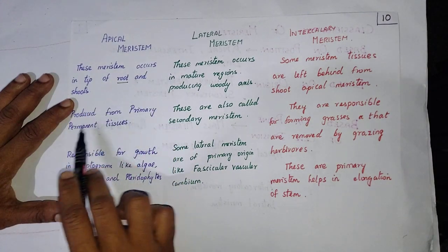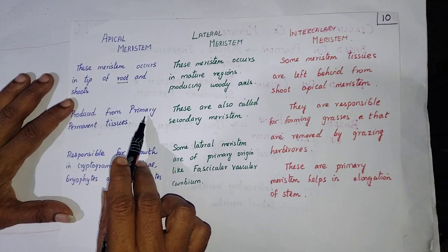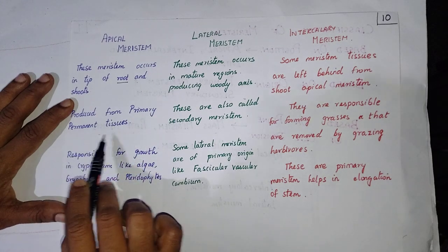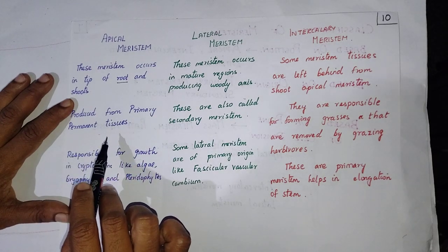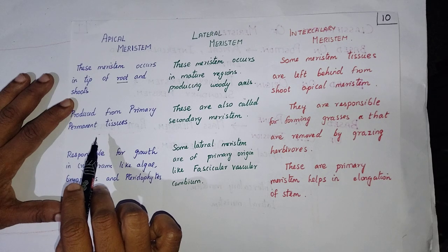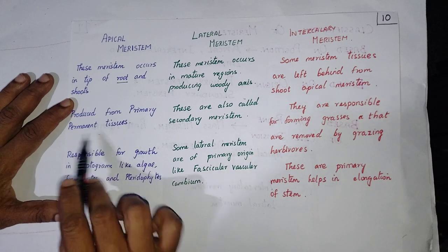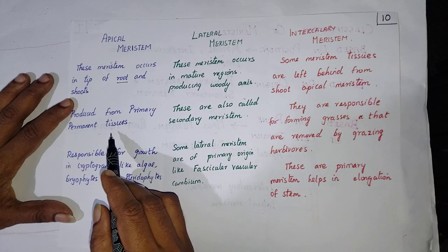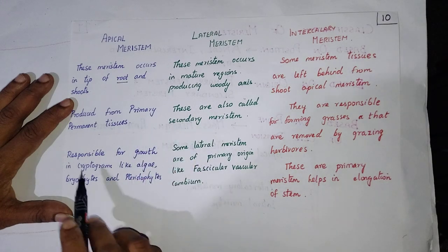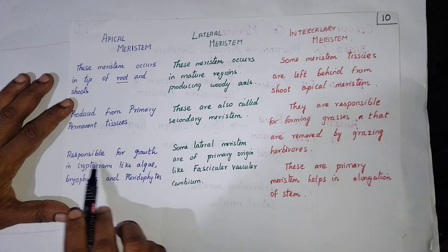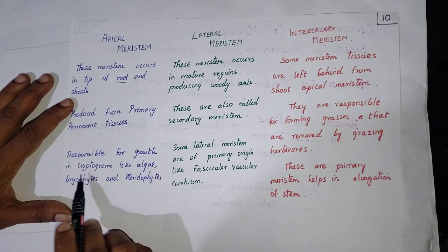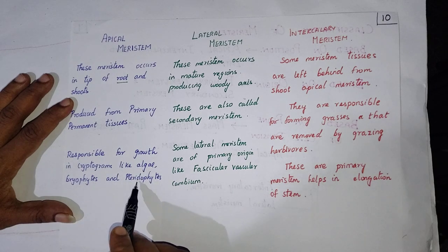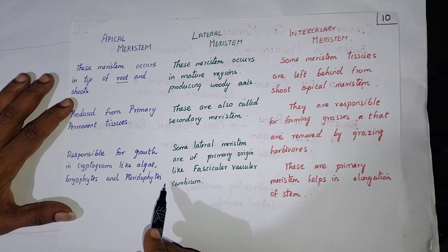It is produced from the primary cells of the permanent tissues. Permanent tissues we have learned already — they are formed from the meristematic tissues and perform a particular function. The apical meristem is responsible for growth in the cryptogams like algae, bryophytes, and also the pteridophytes.